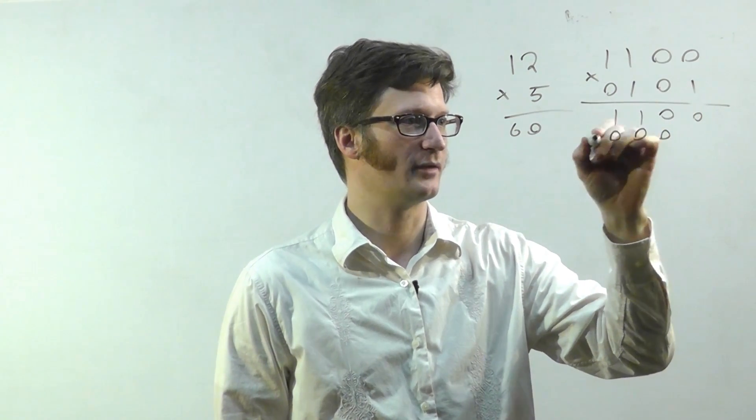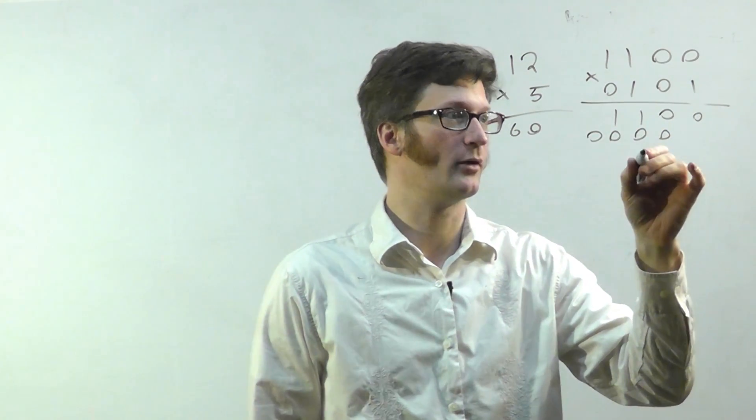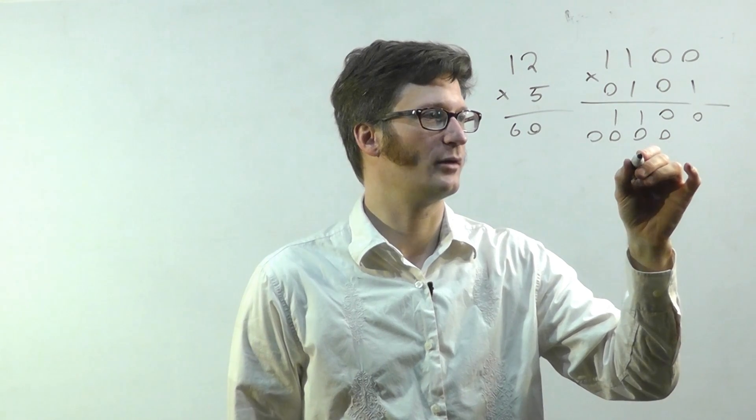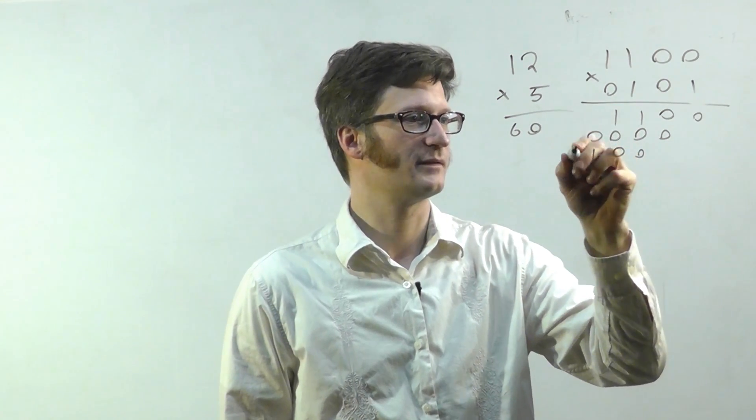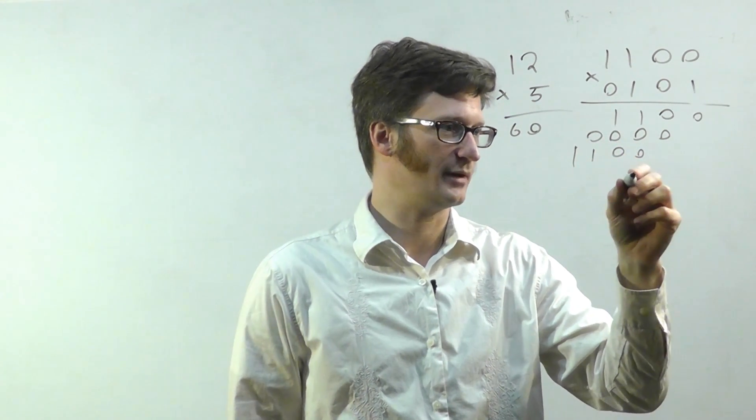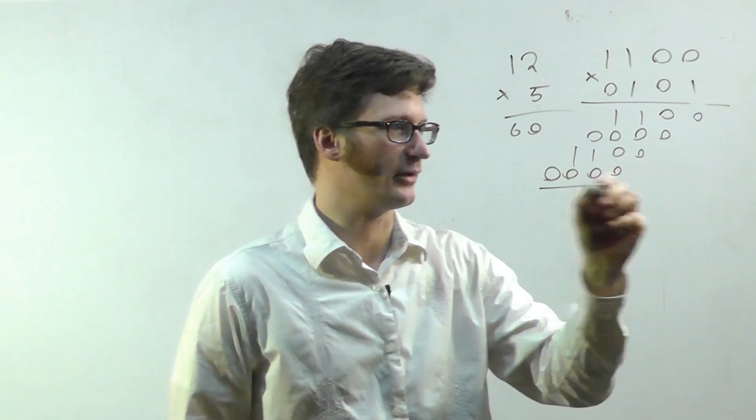And the next row is just zero and all those, so we get zero. And the next row is this. And finally we have a row of all zeros.